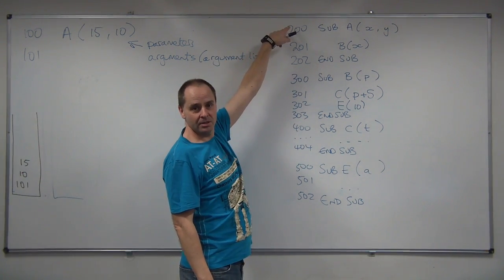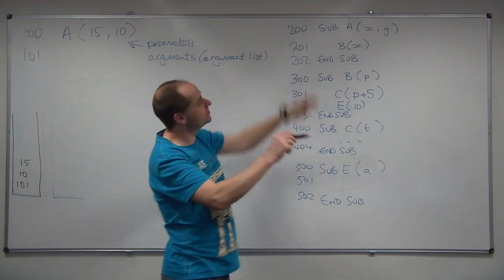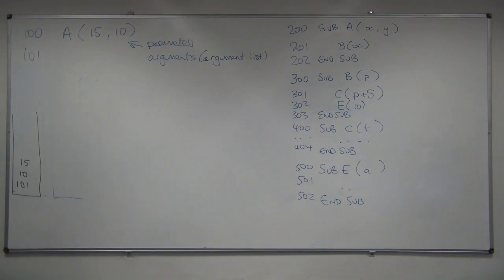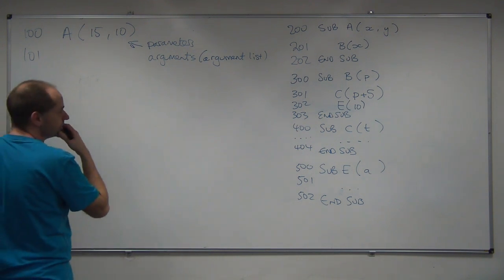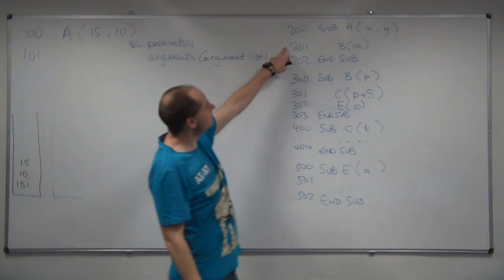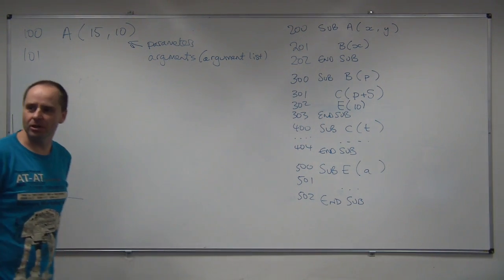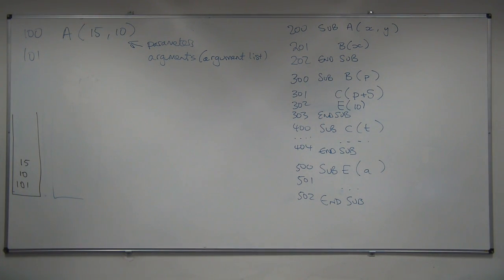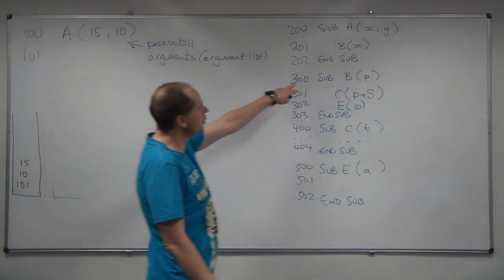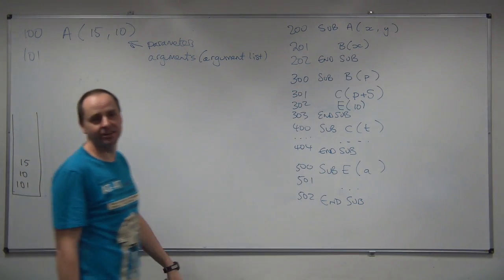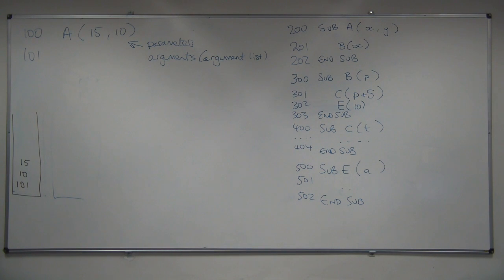So, that's the definition line, X and Y are the two parameters. That's what the person who wrote that subroutine decided to call those parameters. So, we get to line 201, and we're told to call a subroutine. And it says, call the subroutine B with the parameter value X. So, we have to look up what the parameter value of X is, before we can call that subroutine.